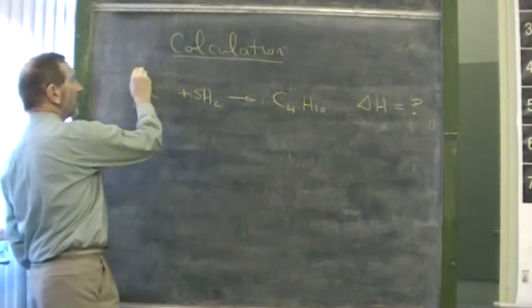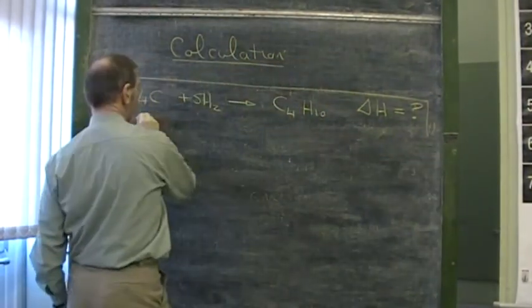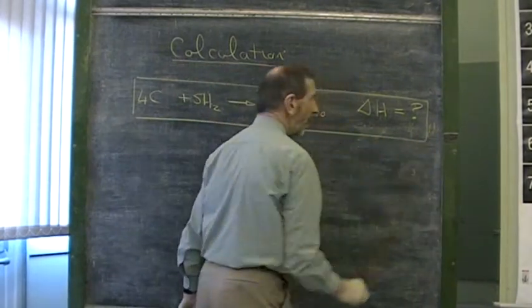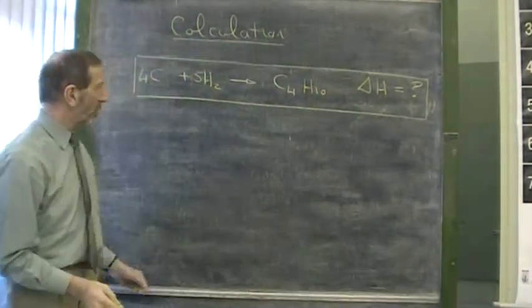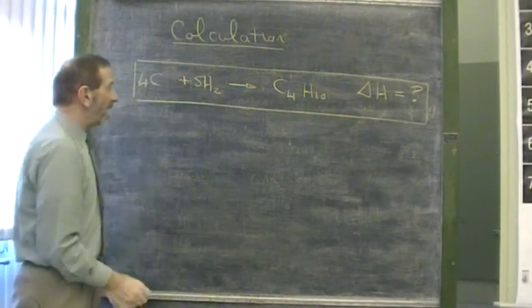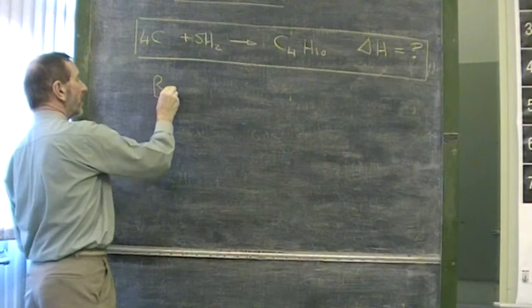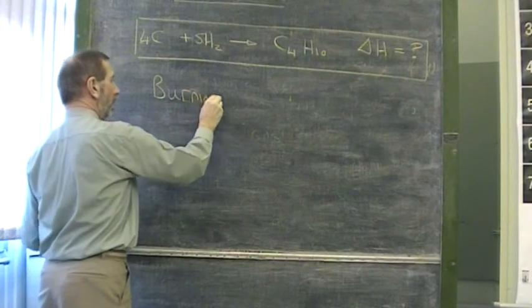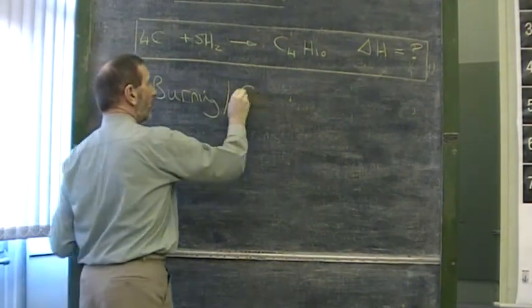It's important to clearly identify what we're trying to do. What comes next is really a construction job. We're going to try to build up this equation from some simple data, and the simple data usually involves burning, or as chemists like to call it, combustion.